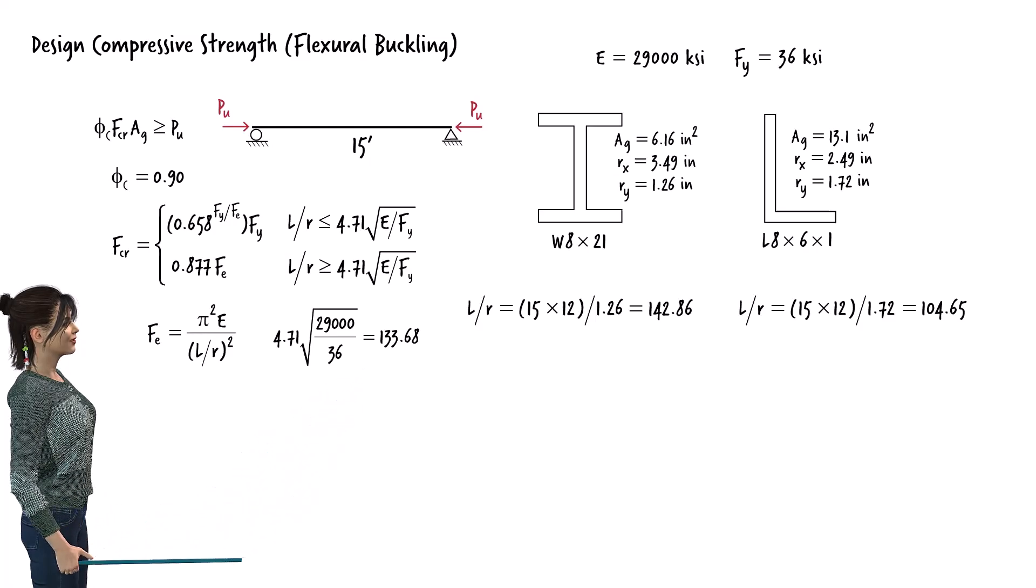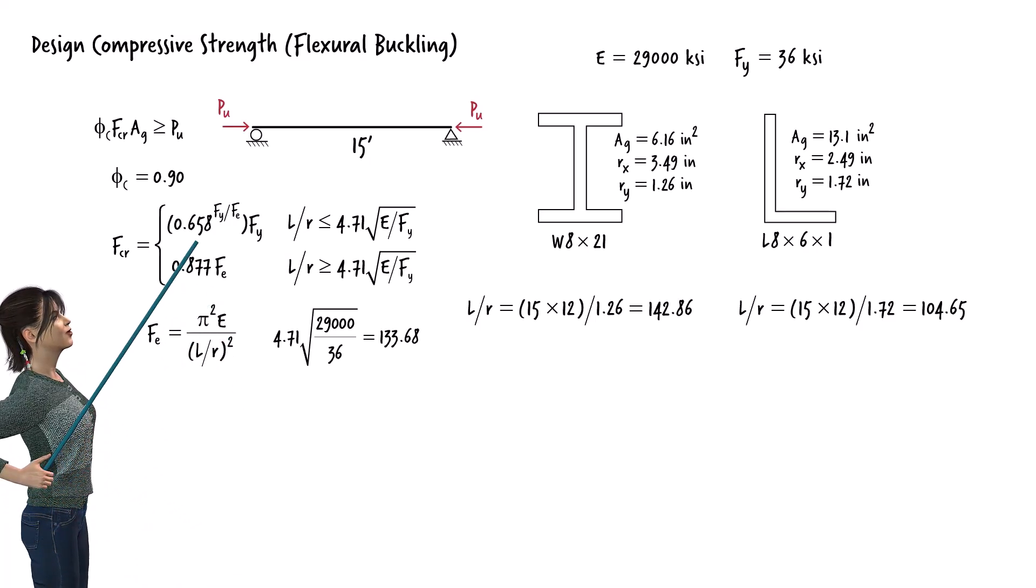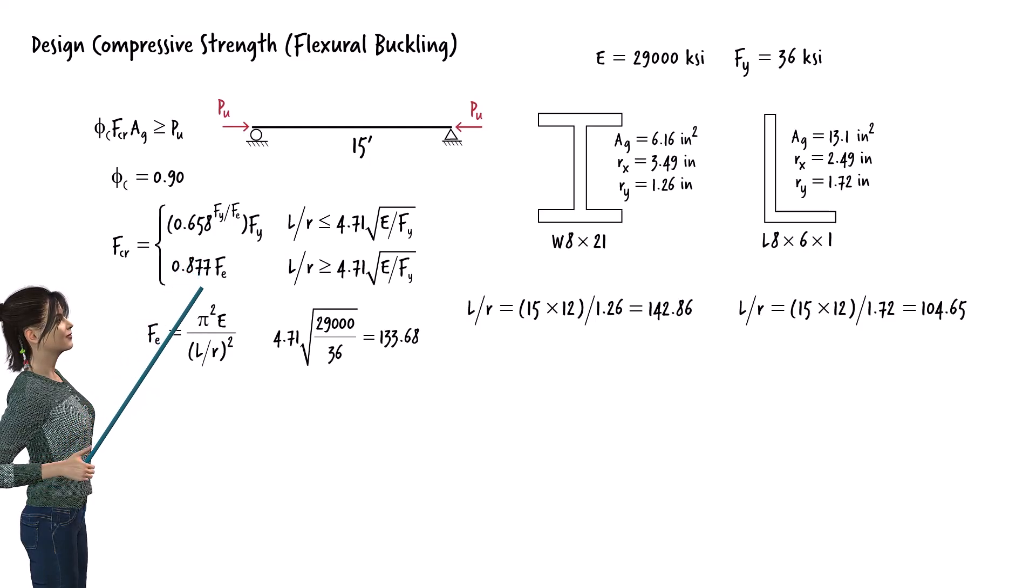So, if the slenderness ratio is less than 133.68, we use this equation to determine the nominal buckling strength. Otherwise, we need to calculate the nominal strength using this equation.